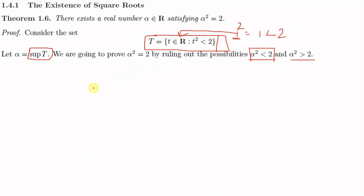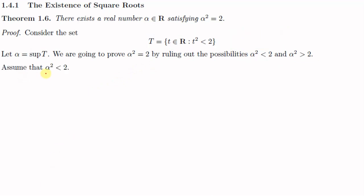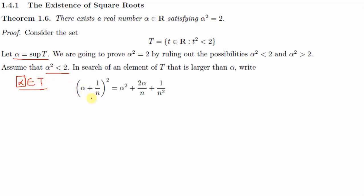For that, we start by assuming that alpha squared is less than 2. By the definition of T, alpha squared less than 2 means alpha is an element of T. Now, since alpha is the supremum of T, we will check whether any element greater than alpha can also be an element of T. We take the element alpha plus 1/n, which is greater than alpha, and check whether it belongs to T by squaring it and checking if the square is less than 2. If the square of alpha plus 1/n is less than 2, then alpha plus 1/n is an element of T.